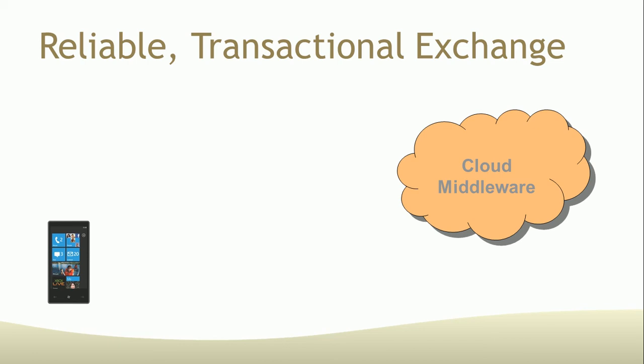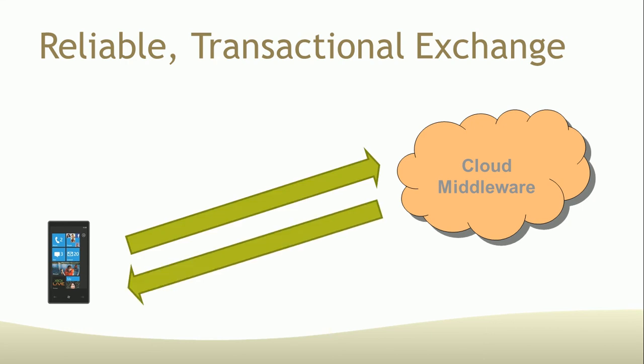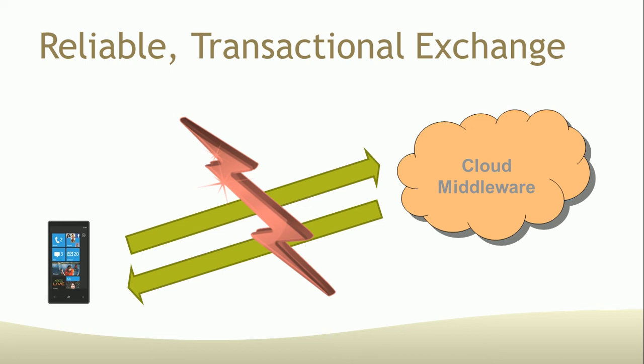Instead of needing to learn the specifics of each API you wish to utilize, a simple message is sent to any of your private, secure cloud services. Data exchange with your cloud services is reliable, even when conditions are not. For example, if your app loses its internet connection during a transaction, the cloud messaging technology keeps the transaction intact so that it can resume whenever the internet connection is re-established.